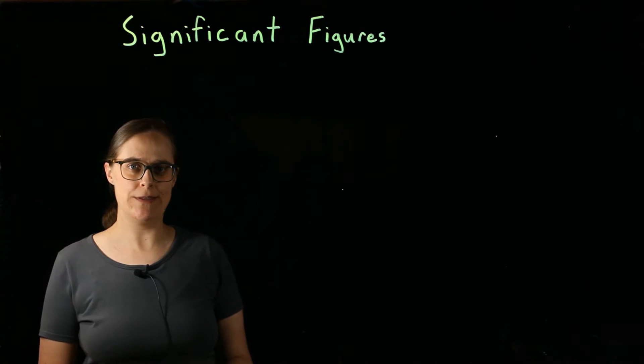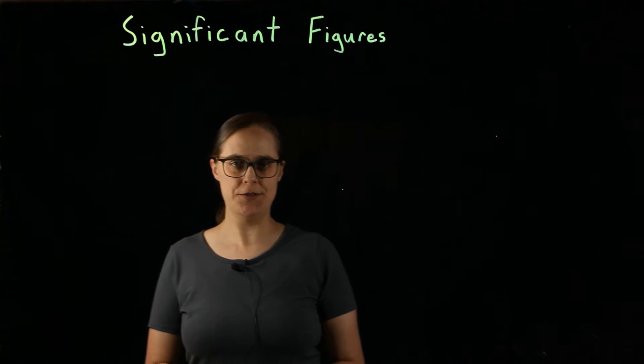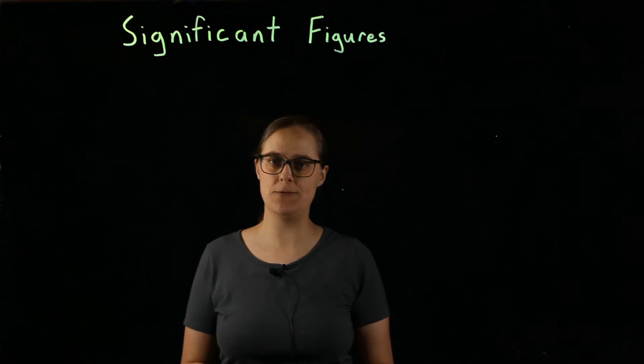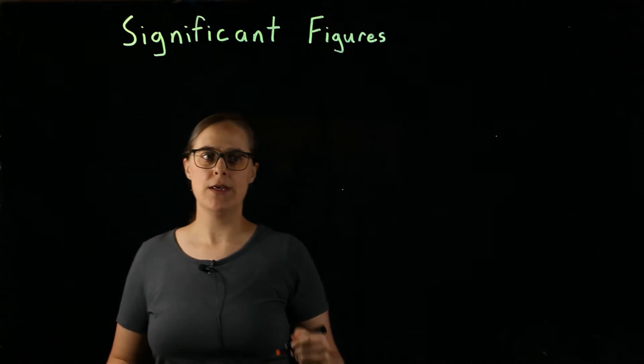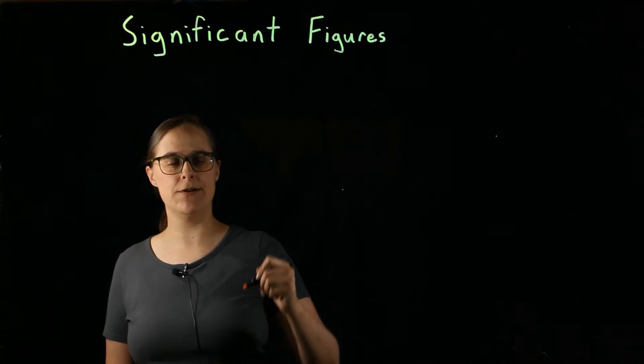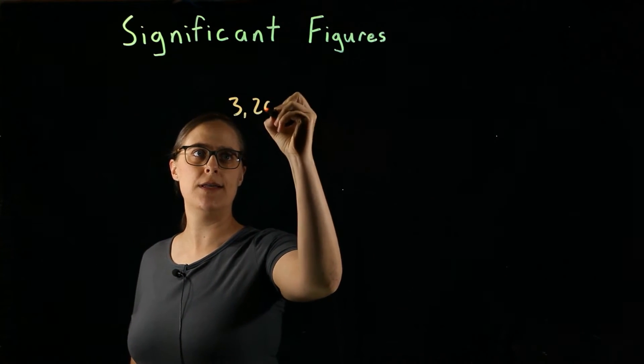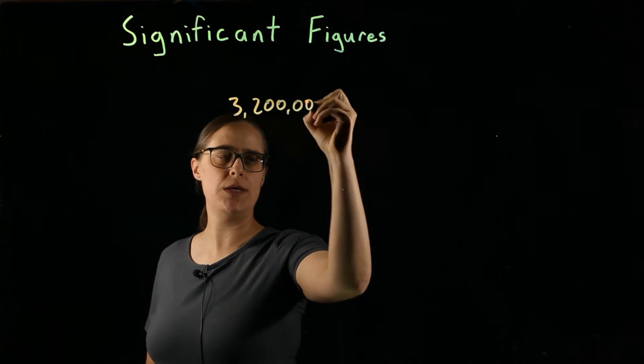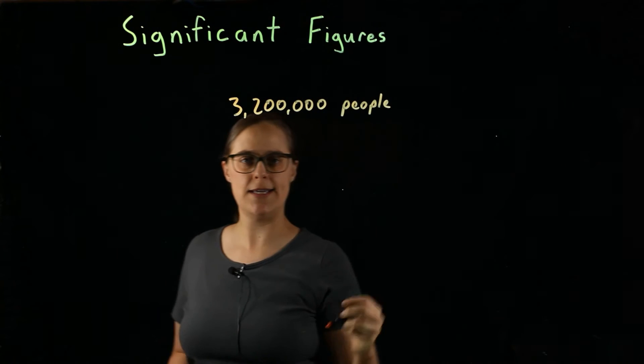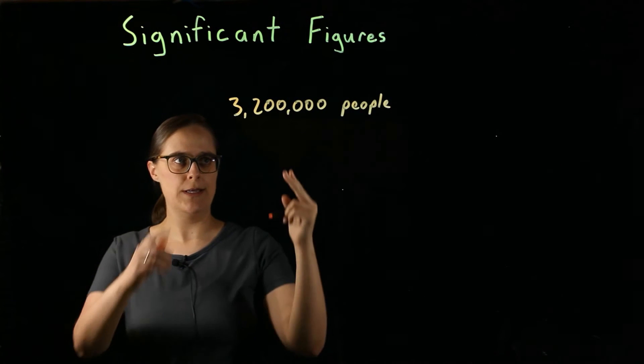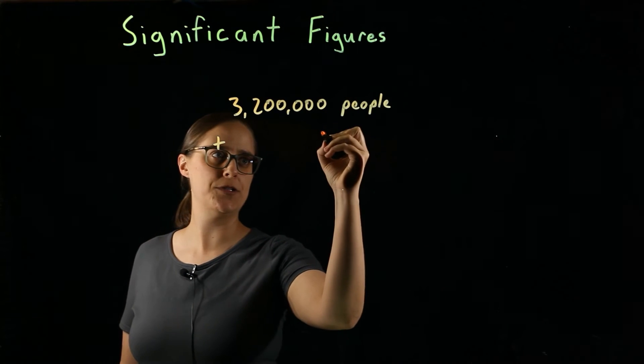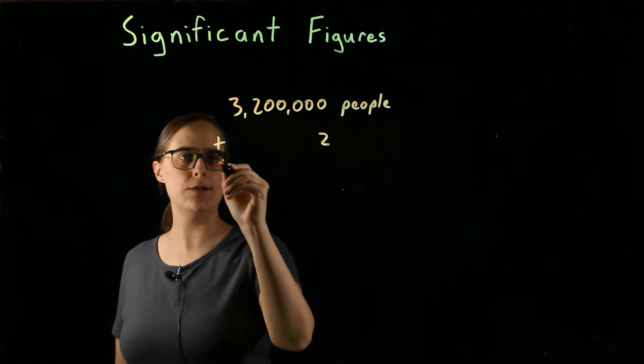Now let's do an example with actual numbers. Imagine you work in a government and you are in charge of making sure there's enough clean water for everyone to drink. You look at the new census because you need to know how many people there are and you find out that there are 3,200,000 people. Immediately after this census is taken, two new people are born. You decide to update your number, to update your total population number. So you add 2 to your original number.